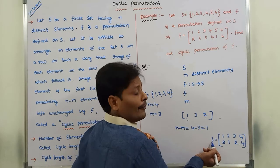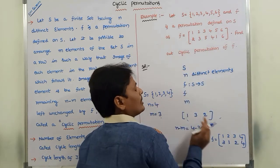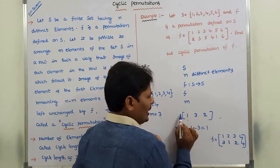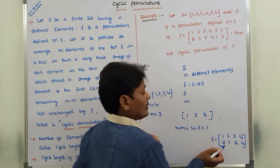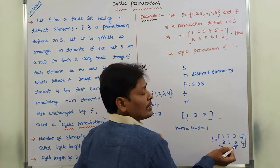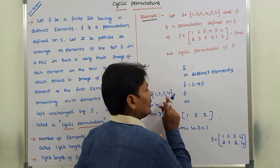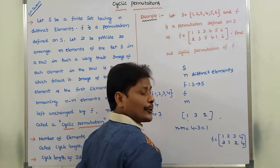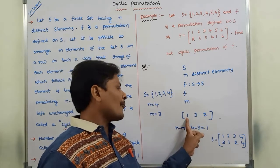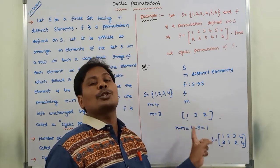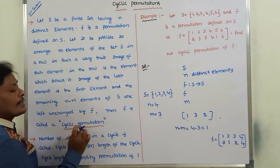Now we write the permutation F. First, write all elements of set S in the first row: 1, 2, 3, 4. Then in the second row, the images: 1's image is 3, 3's image is 2, 2's image is 1. The remaining element is 4 in the set and 4's image is also 4. The image of each element in the row is the element which follows it, and the image of the last element is the first element. Whenever F satisfies this condition, F is called a cyclic permutation.